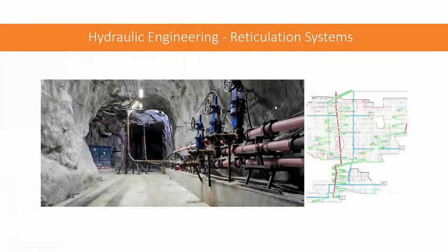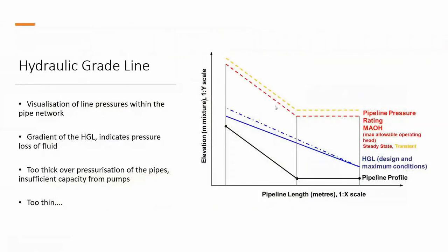Hydraulic engineering forms the backbone of the paste system. The underground pipe network is called a reticulation system, and its purpose is to connect the process plant or paste plant on surface to every single stope that you want to fill underground. This system can be immensely complicated — hundreds of kilometers of pipelines spanning potentially 2,000 to 3,000 meters of depth — while you're trying to pump a thick fluid through without blocking any lines or blowing any pipes. It's a very careful balancing act. To undertake this, we produce something called a hydraulic grade line — a visualization of a very complicated pipe network that makes it simple and provides a lot of information.